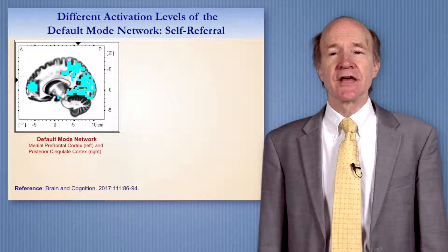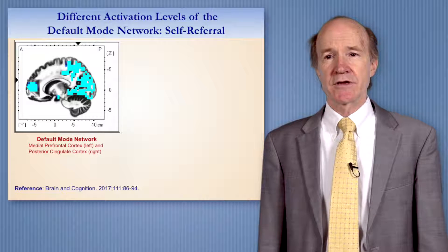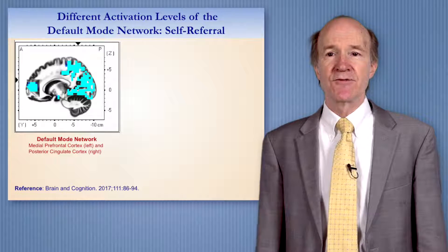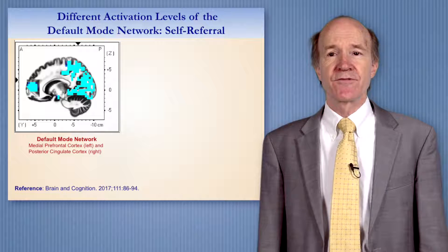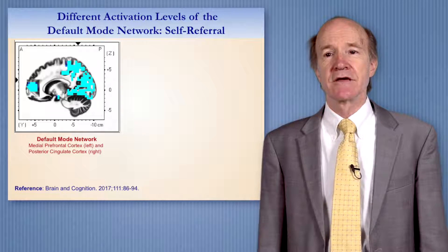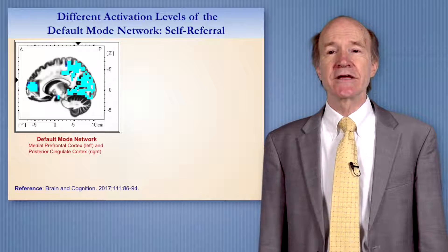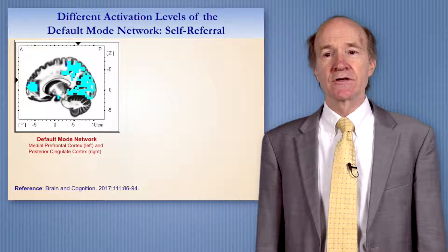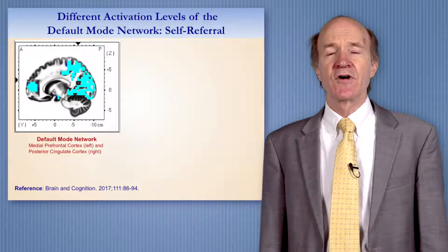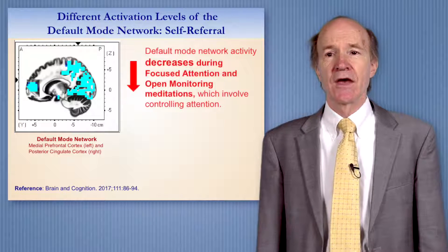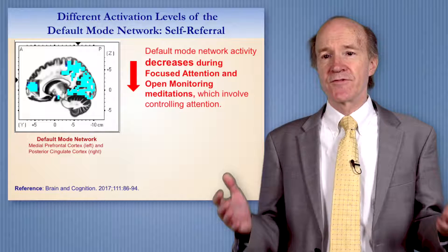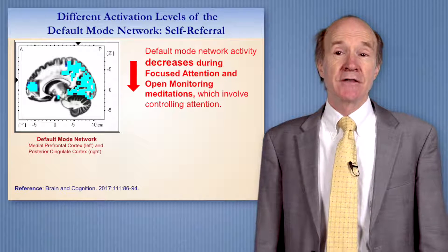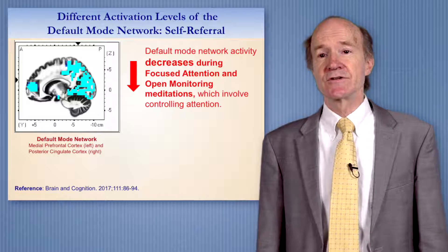Second, meditations differ in the level of activation of an intrinsic brain network called the default mode network. In this slide, you can see the areas of the brain involved — it's active in the front and also in the back. The default mode network is high whenever the mind is moving easily, when you're thinking about yourself or others, and low whenever you're controlling the mind, controlling attention, or involved in goal-oriented behavior. Research reports that focus attention and open monitoring meditations are associated with low default mode network activity, which is expected because these meditations involve controlling the mind.